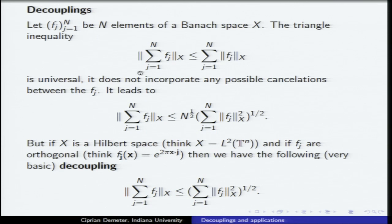But if X happens to be a Hilbert space — think about the case of L2 on the torus — and if the functions happen to be orthogonal, then you get something more meaningful, something rather sharp and useful. This is what we want to call a little L2 decoupling. So this is already a meaningful inequality.